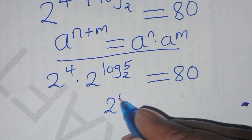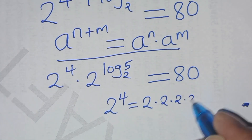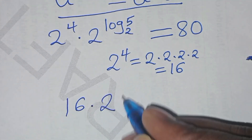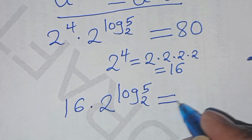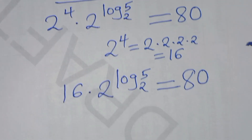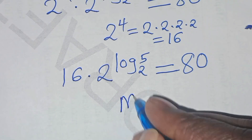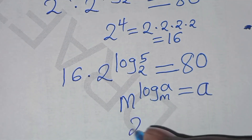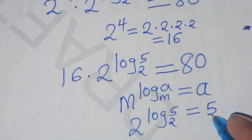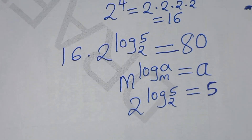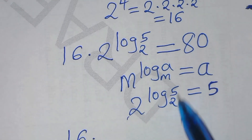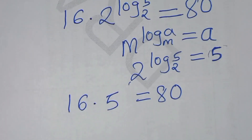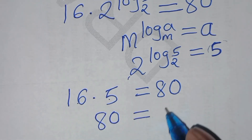We find that 2 to the power 4 is 2 times 2 times 2 times 2, which is equal to 16. So we have 16 multiplied by 2 to the power log 5 to base 2, which should give a value of 80. Since 2 to the power log 5 to base 2 is in the form m to the power log a to base m, this equals a, so 2 to the power log 5 to base 2 equals 5. Therefore, 16 times 5 equals 80, which equals 80. ✓